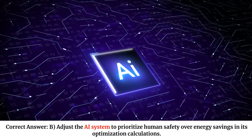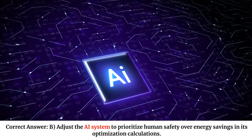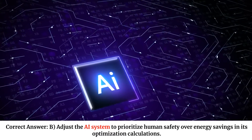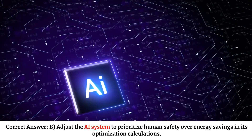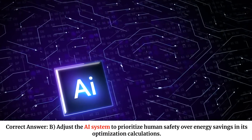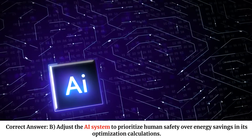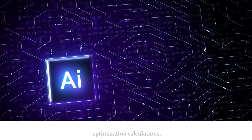Correct answer: B. Adjust the AI system to prioritize human safety over energy savings in its optimization calculations.